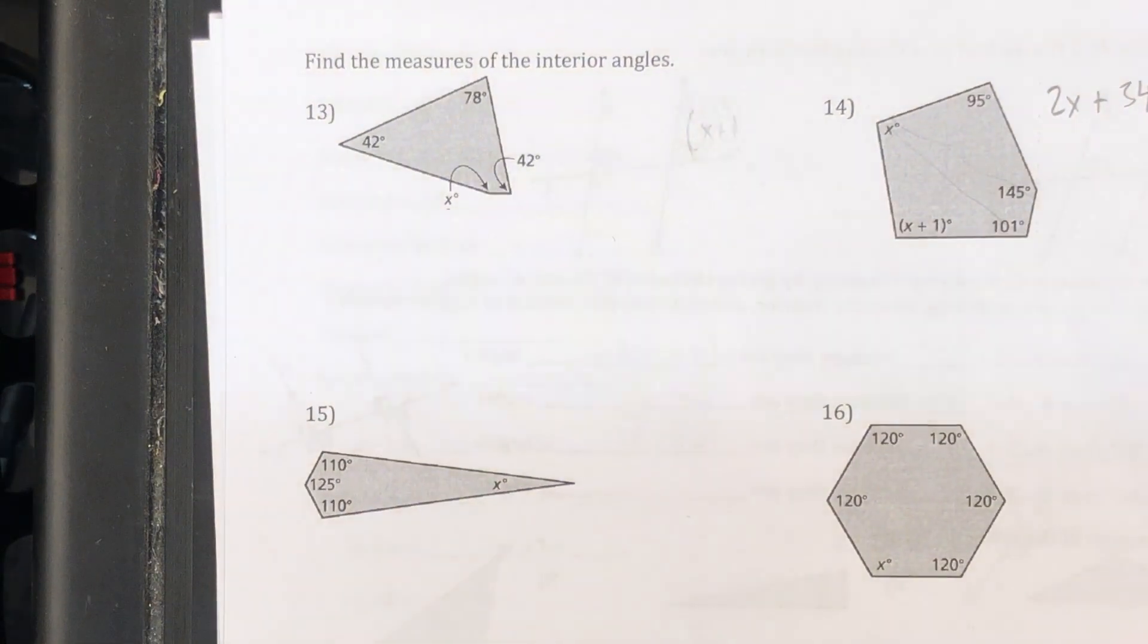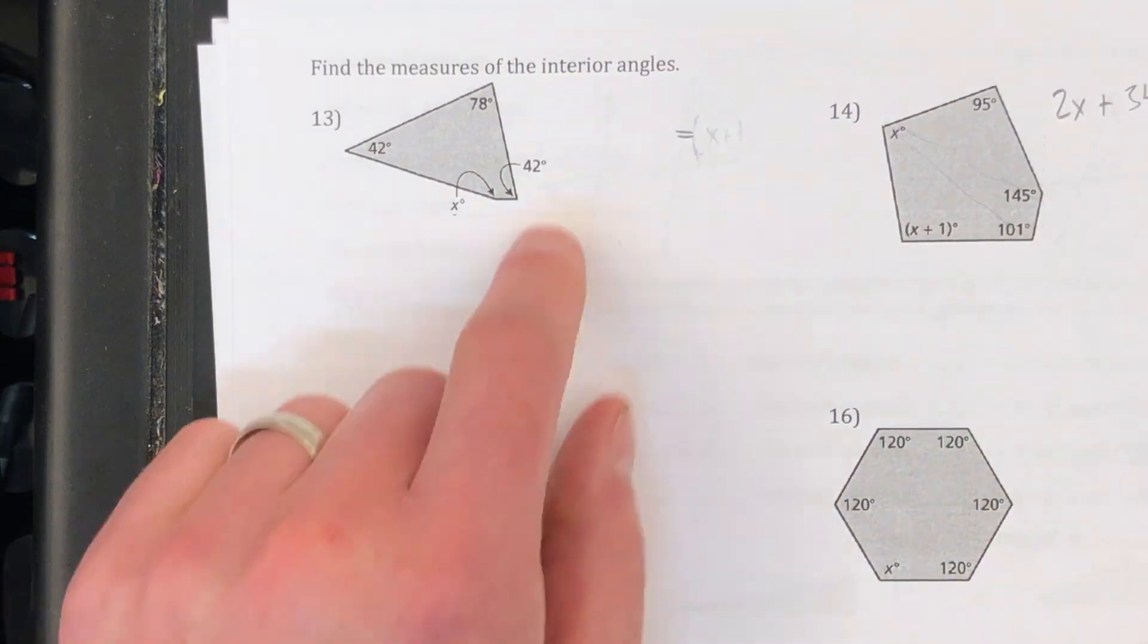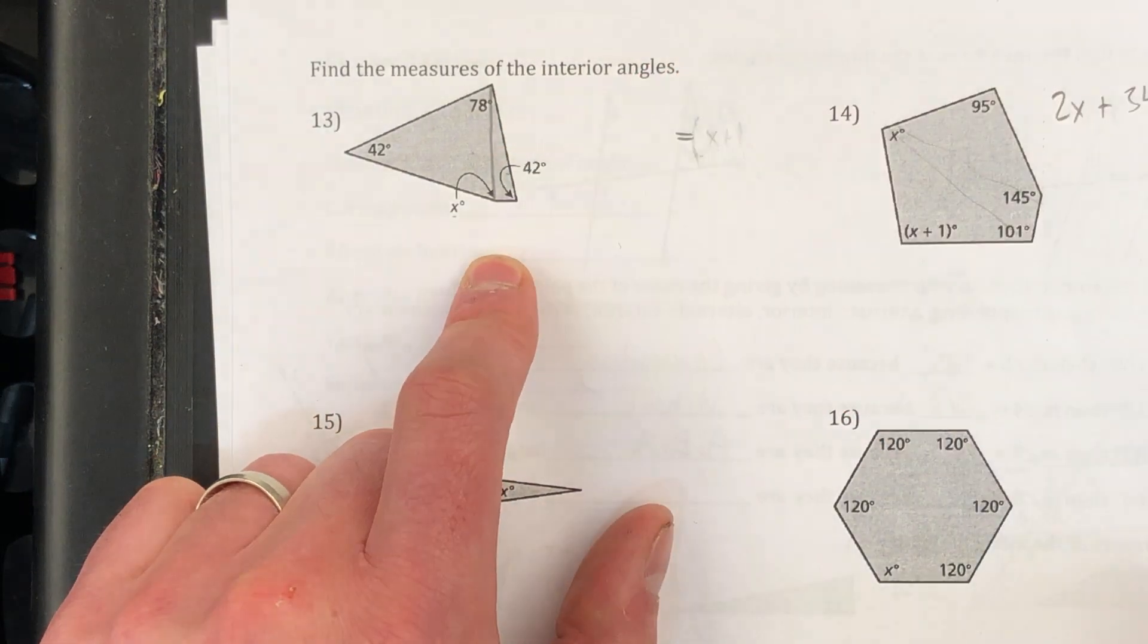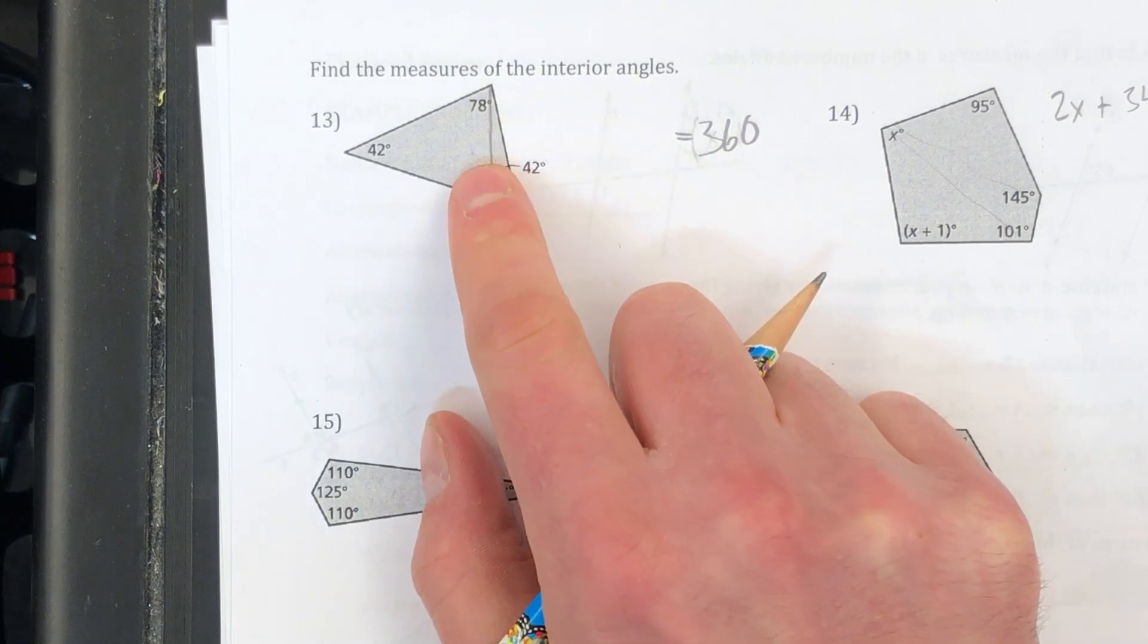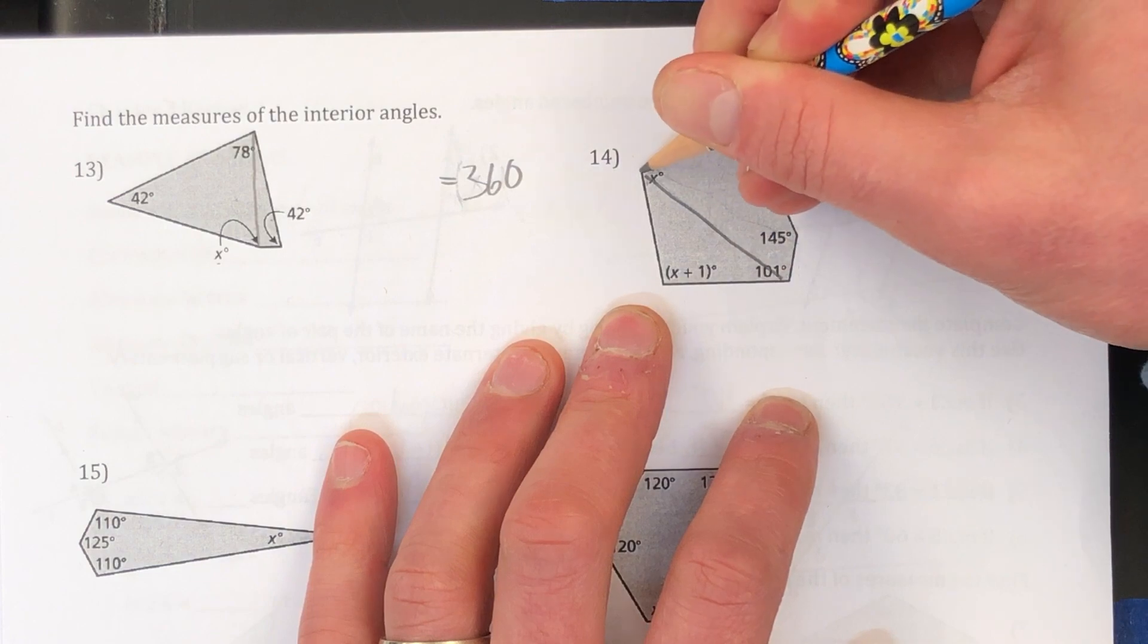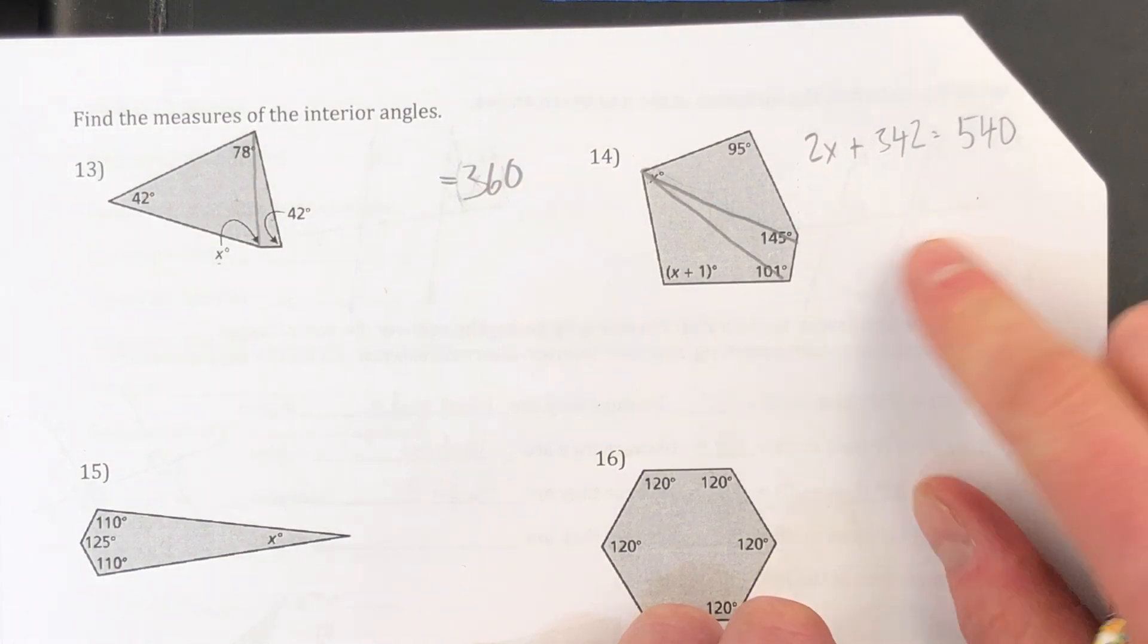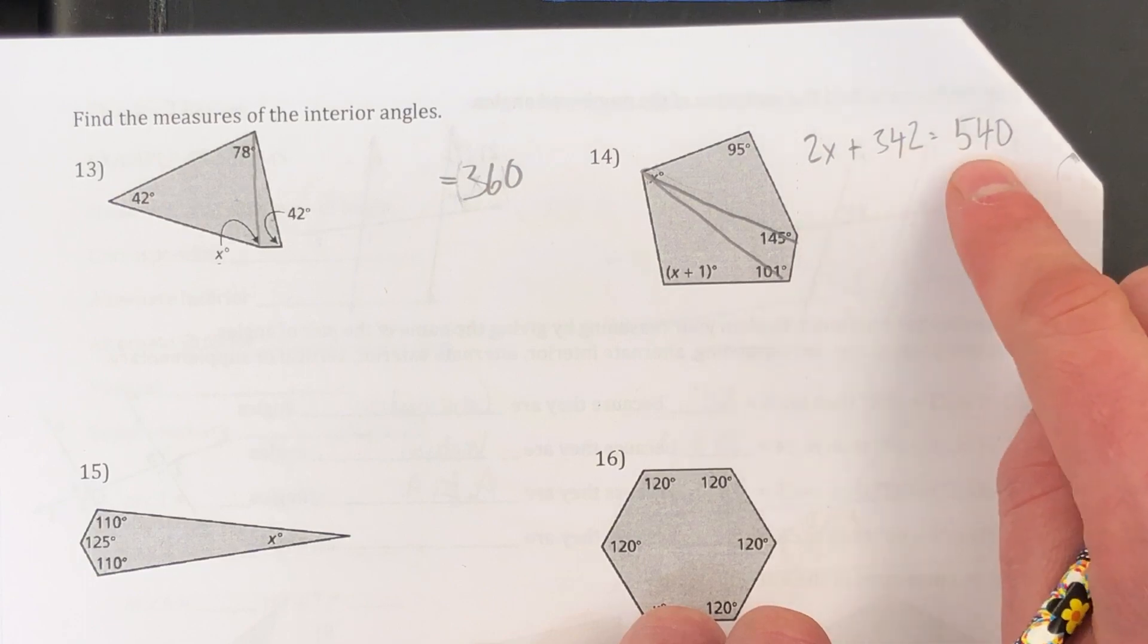Moving along to the back here. So here we have polygons. We're finding the interior angle measures. So a trick here is to find out how many triangles the shape can be split into. So that's one triangle, two triangle. Every triangle is worth 180. If there's two triangles, then that means the sum of the interior angles must be 360. So I'm looking at number 14 here. I can split this into one, two, three different triangles. So the interior angle sum must be 180 times three. That gives me 540. That's how I set up this equation. All of this stuff here together must add up to 540.